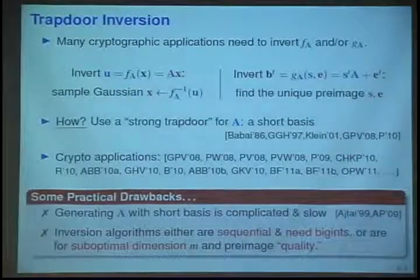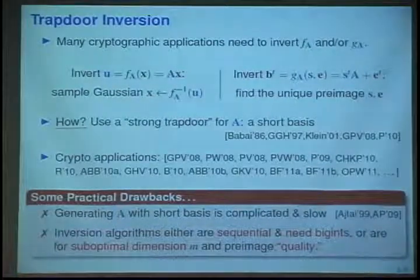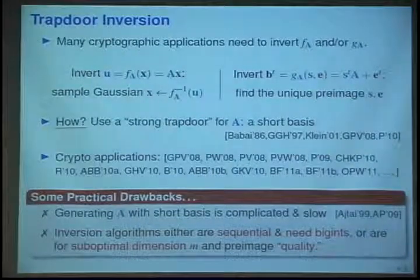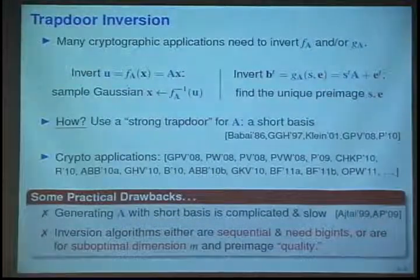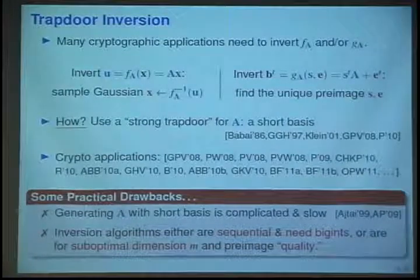And the second is that the inversion algorithms for F and G, these one-way functions, are either pick your poison, sequential and need big integer arithmetic, or they're parallel and use small integers but give you suboptimal dimension and quality.